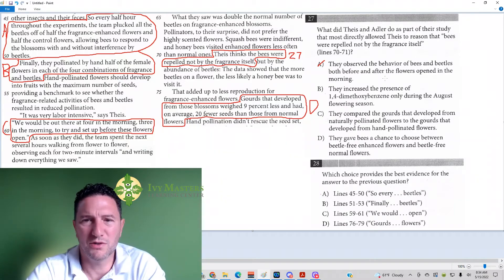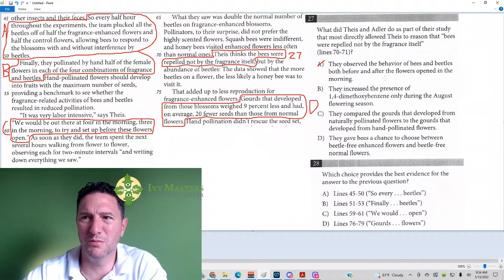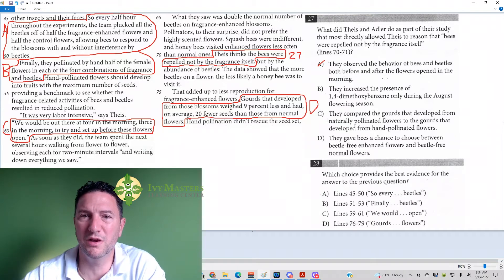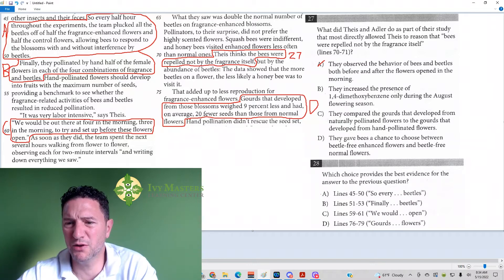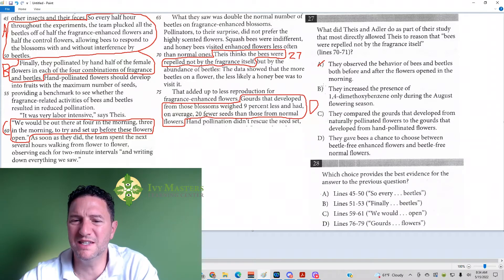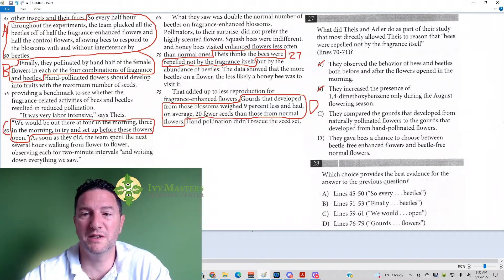If the flowers are closed, then it's not going to be emitting so much fragrance. So if they're open, then they're going to be open with many more fragrance. Anyway, so it should be, they increase the presence of 1,4-dimethyloxibenzene only during the August flowering season. Well, what season it is, is not going to depend on whether or not the bees are attracted or are repelled by either the fragrance or by something else.